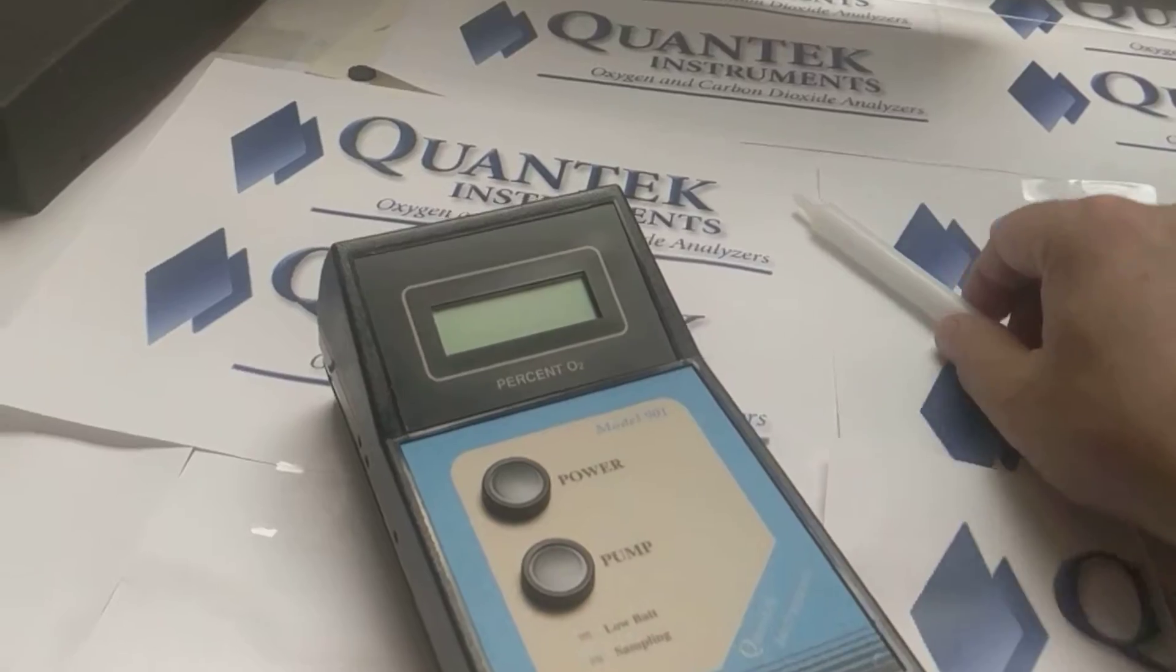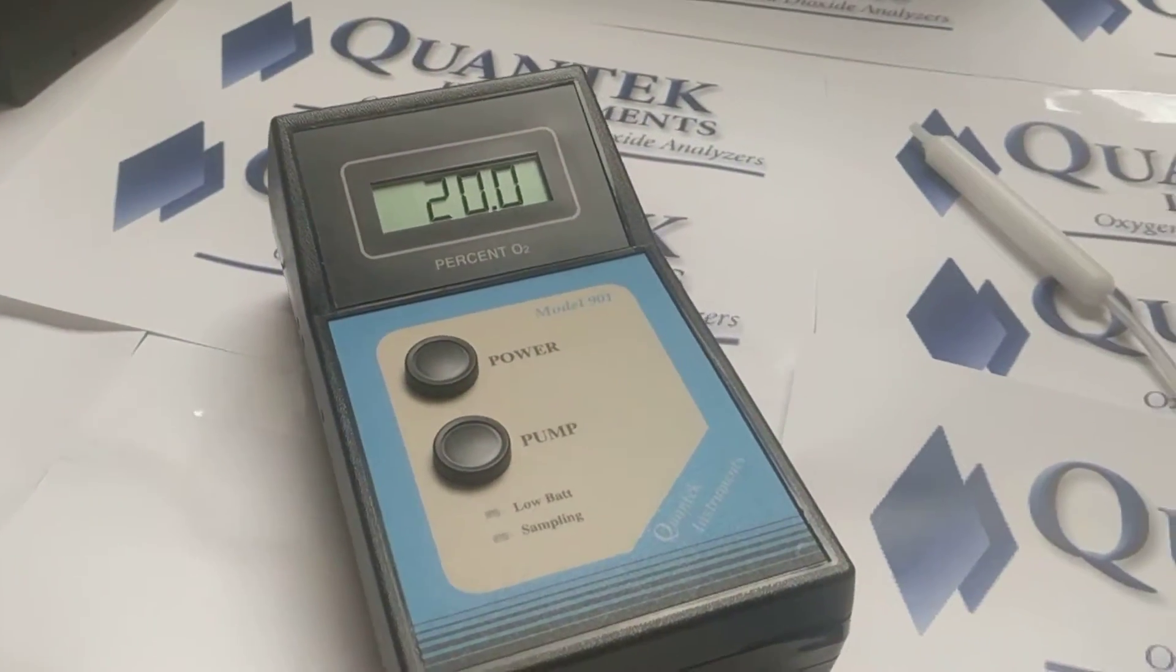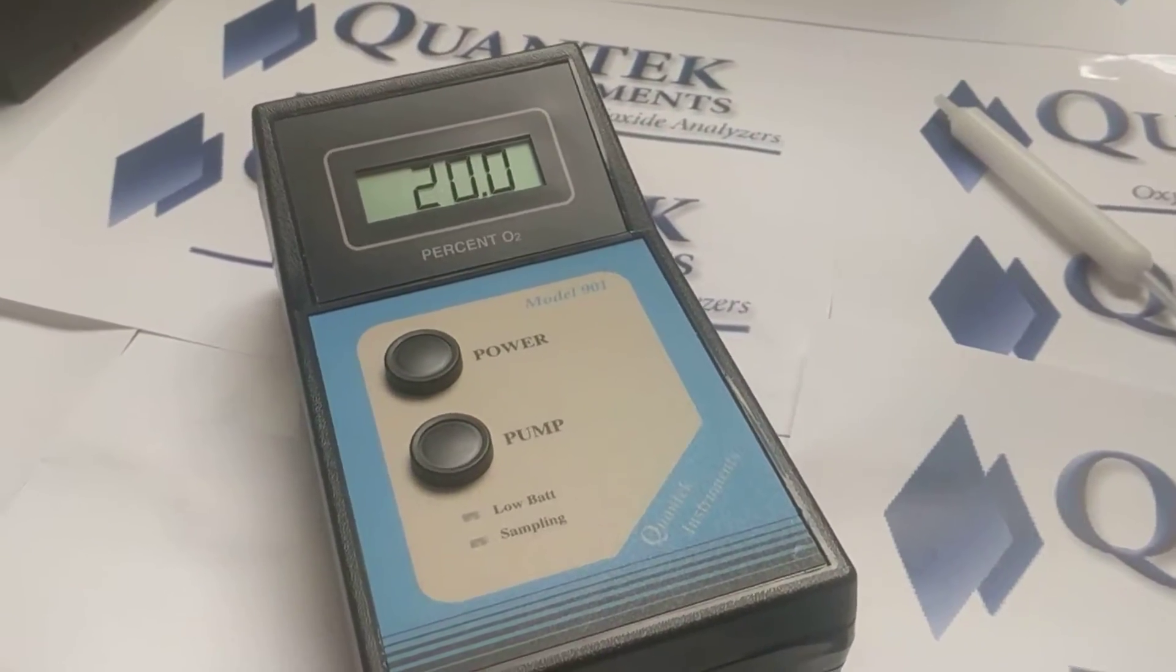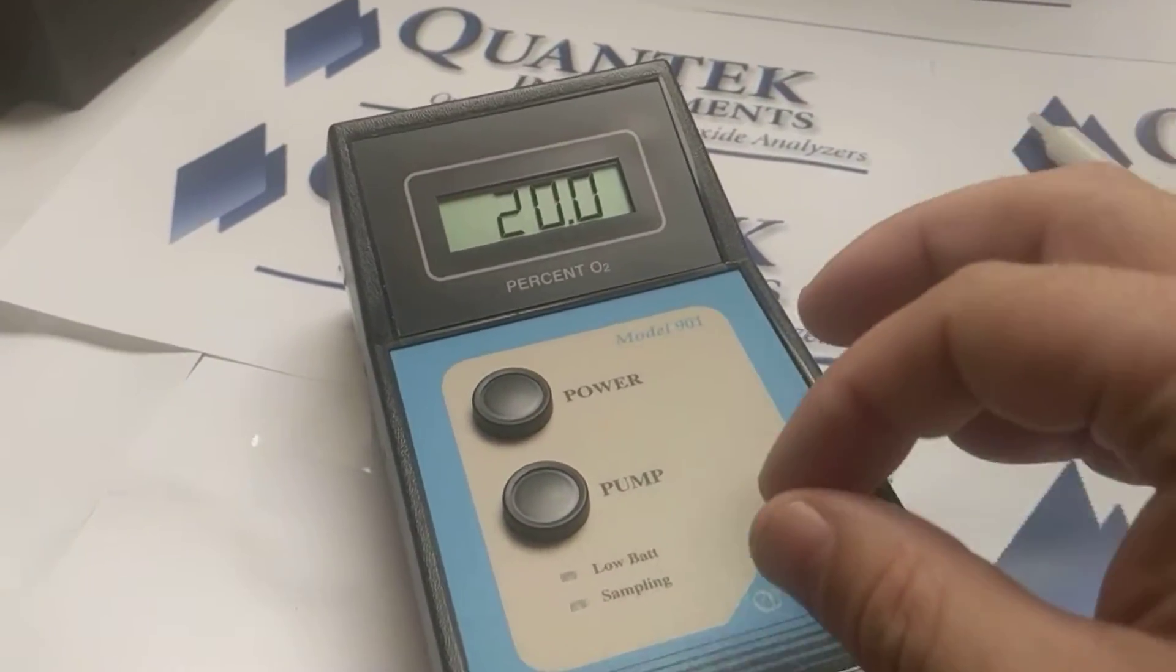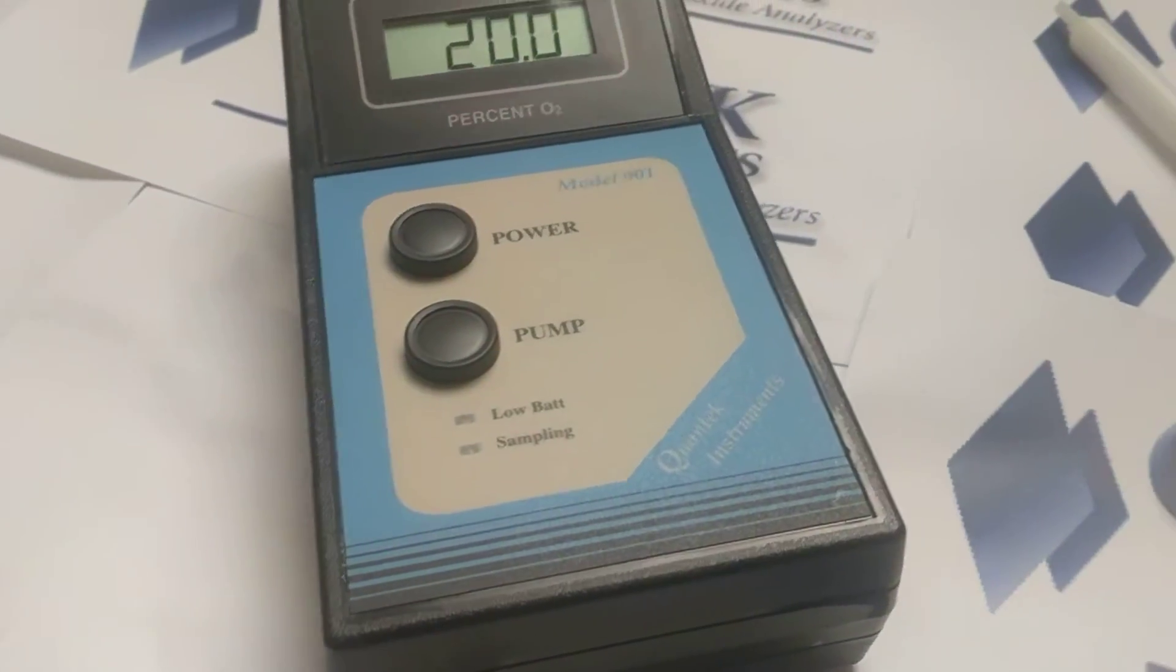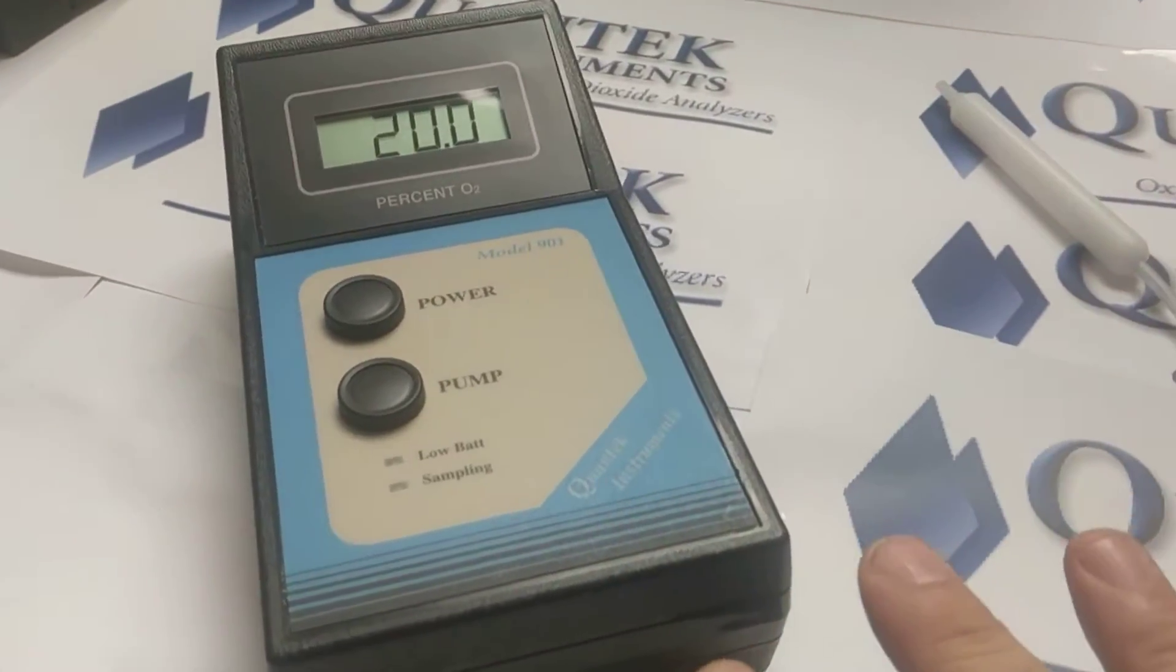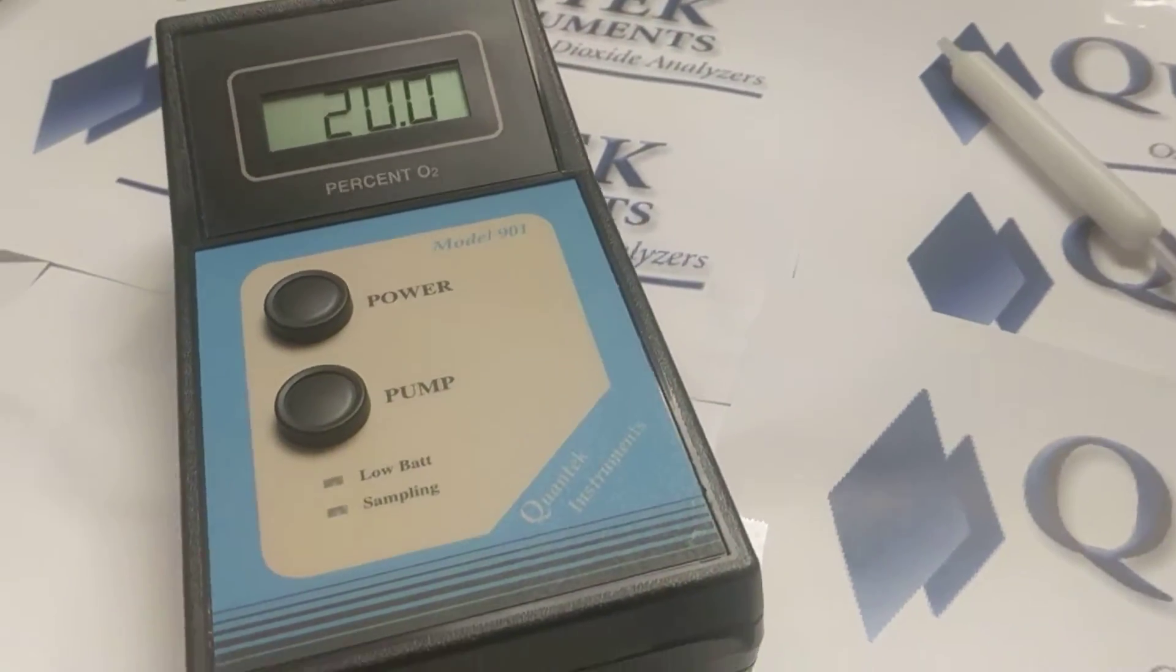So the first step is we're going to power the instrument on, and you're going to notice something when it powers on. It reads 20.0. This is normal as the sensor will consume a tiny amount of the oxygen that is in the sensor, and when the instrument is left idle, whether it's on or off, that reading will drift down.